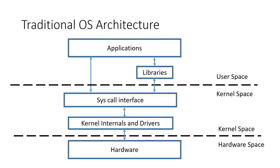Let's look at the traditional OS architecture. In this simplified schematic, the user space sits on top, where the application and the libraries reside. They interface with the kernel space through system calls, which go through a trap when they go to the kernel, through an interface, and then those system calls drive the kernel internals and the drivers. In the kernel space, you have isolation provided for the user space so that the hardware never directly interfaces with user space. The kernel internals then drive the hardware, and the hardware can drive the kernel when IO is received, sending it back through a system call interface back up to the applications.